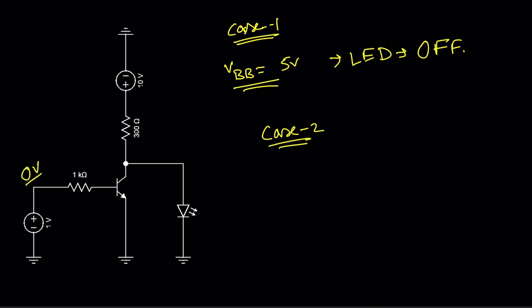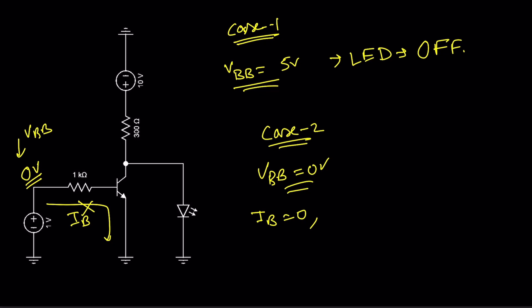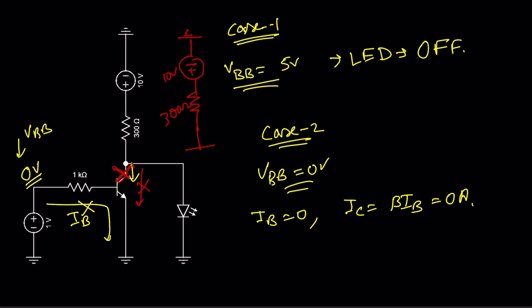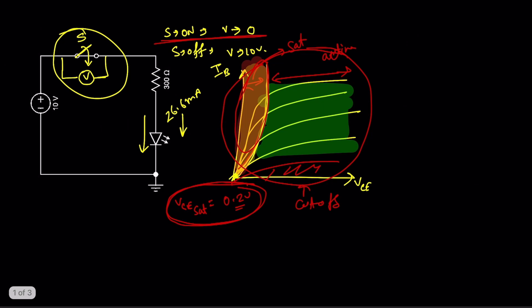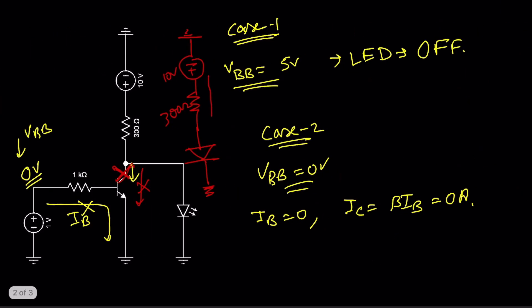Case 2: when VBB is 0 volt. Since VBB is 0 volt, there is no current flowing through the base of the transistor, so IB = 0. Since IB = 0, IC = beta × IB = 0 ampere — there is a disconnection and no current flows through the transistor. The circuit then effectively looks like a 10 volt source, a 300 ohm resistance, and an LED in series. Current flows through the LED and it turns on, with approximately 26.6 milliampere flowing.